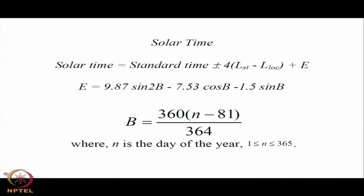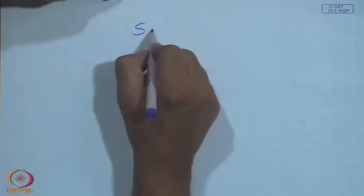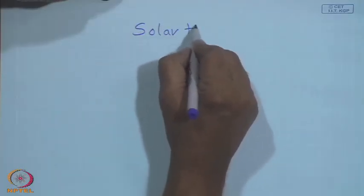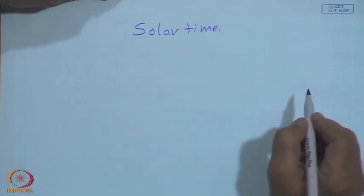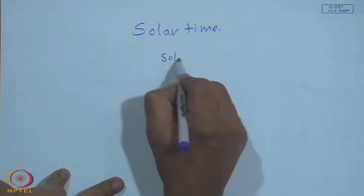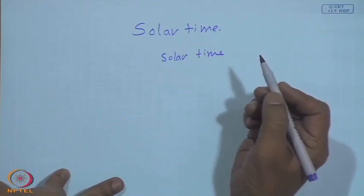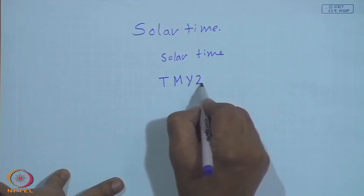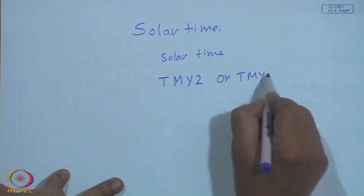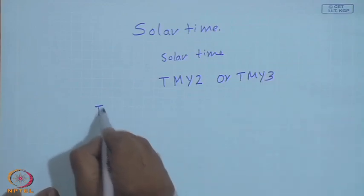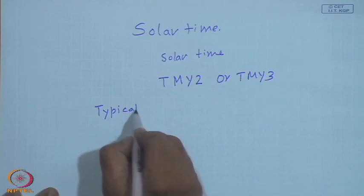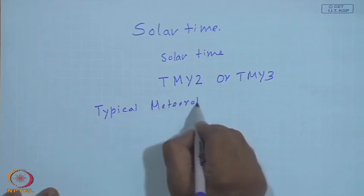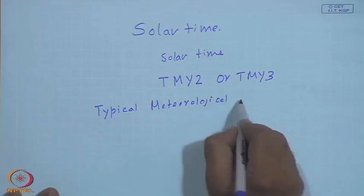One important thing to consider is solar time. Unless otherwise stated, we mean solar time throughout this course, and most of the data is given in solar time. One of the sources is TMY2 or TMY3 — Typical Meteorological Year data.